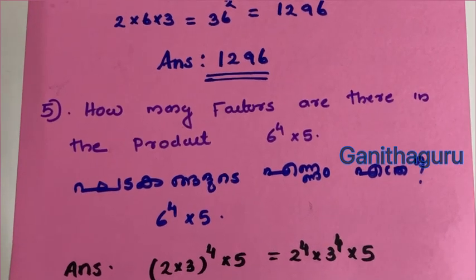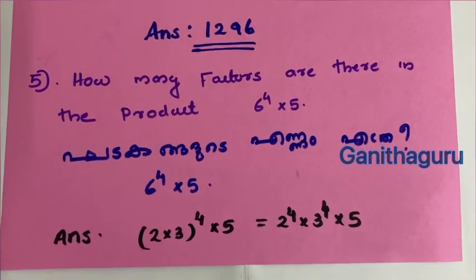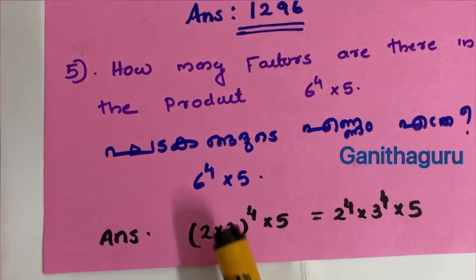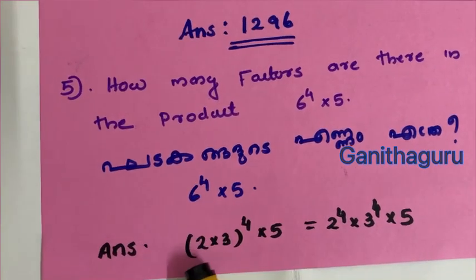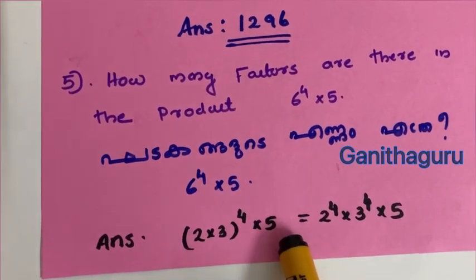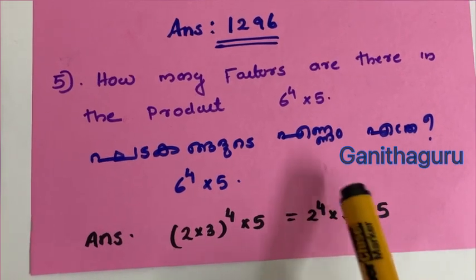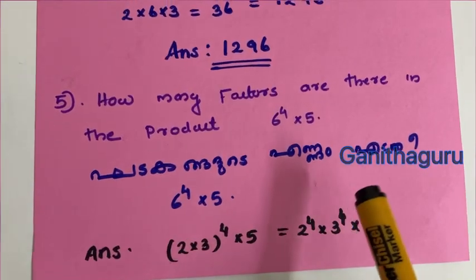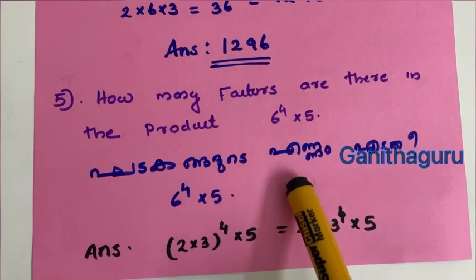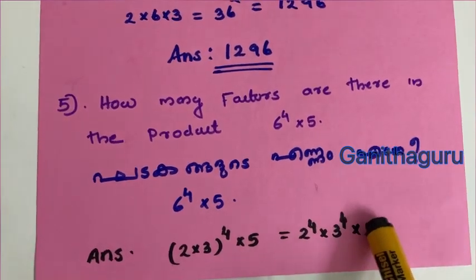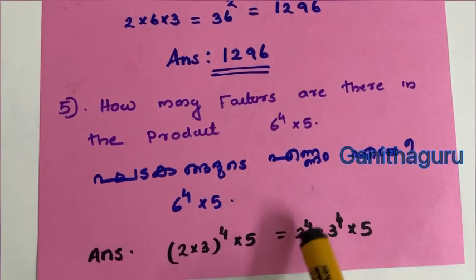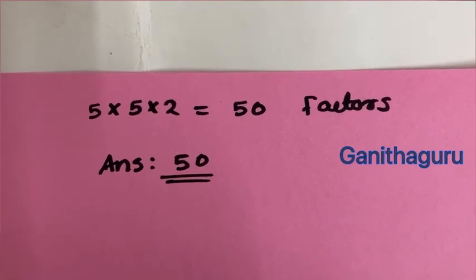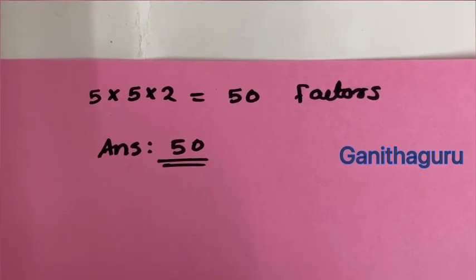Another question on factors. The powers are 4 and 3, giving 4 plus 1 equals 5. And power over 1 gives 1 plus 1 equals 2. So 5 into 5 into 2 equals 50 factors.